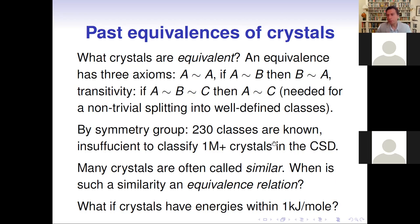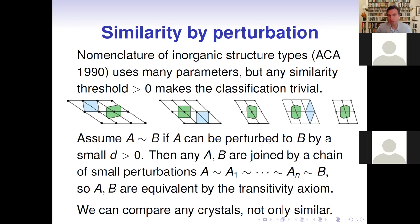No matter what threshold we choose, we call it epsilon-similar. What happens in such a case? There are similar approaches that try to split inorganic structures into so-called configuration types. However, many of these past equivalences were based on parameters — thresholds — to show whether crystals are similar depending on a threshold. One quick problem is that our concept of similarity changes if we change the threshold, depending on molecular composition.